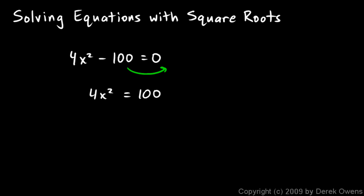In other words, add 100 to each side so we get 4x squared equals 100. Then to isolate x, to solve for x, we need to get rid of this 4. The 4 is multiplied so we need to divide by 4, which means of course we need to divide by 4 on the other side.